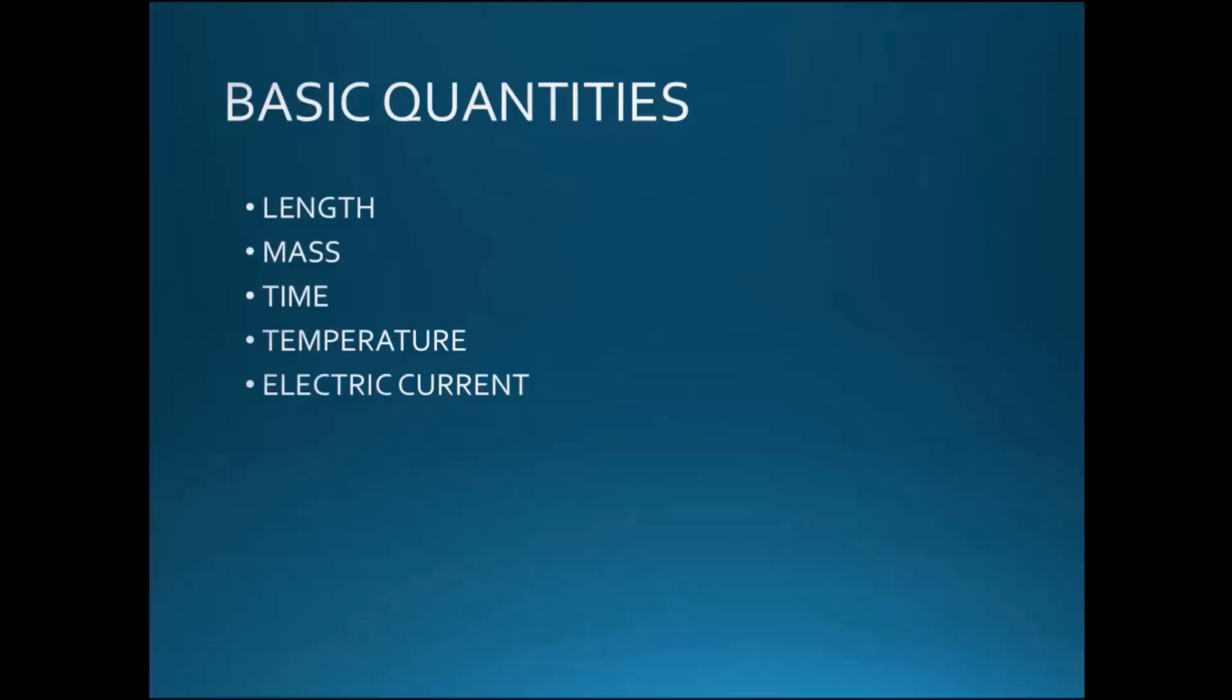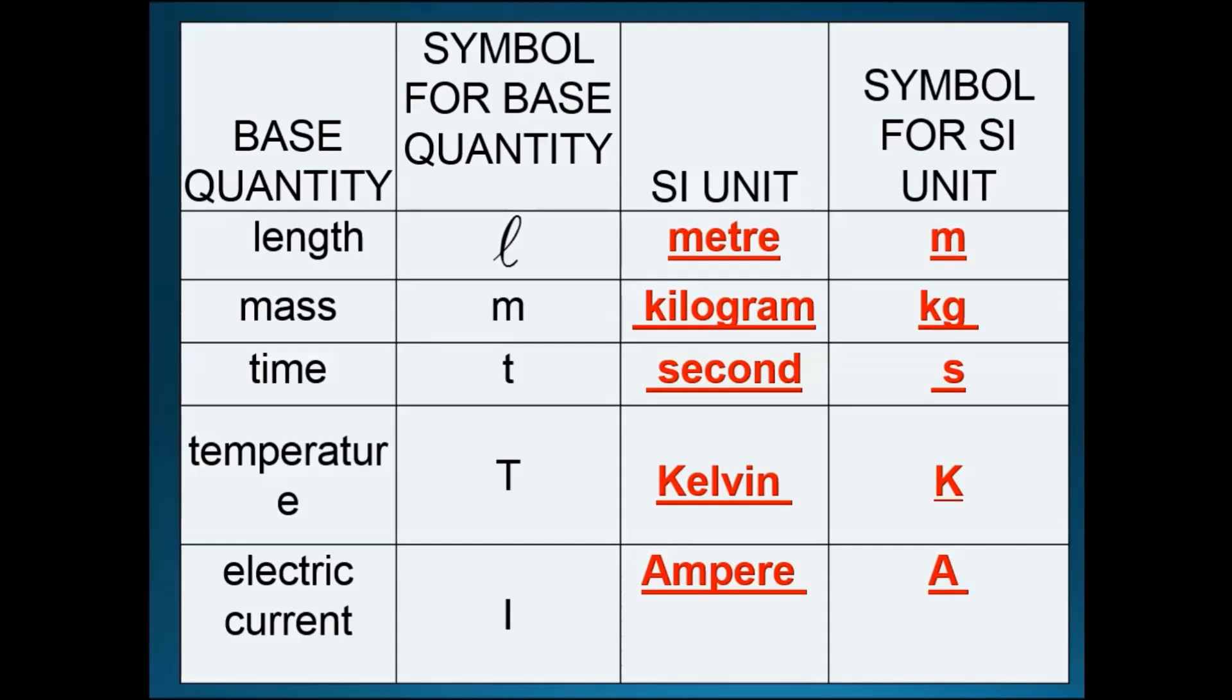The SI unit for length is meter, with symbol m. The SI unit for mass is kilogram, with symbol kg. The SI unit for time is second, with symbol s.